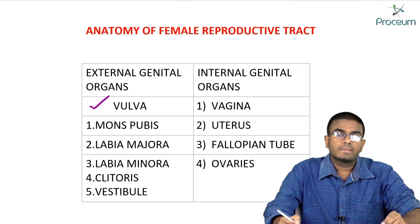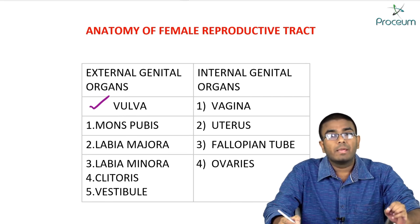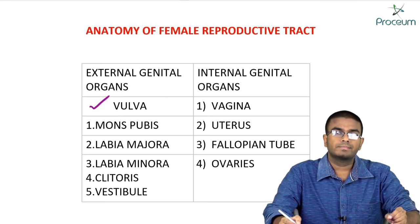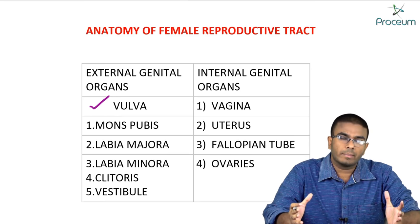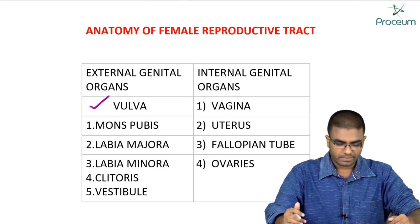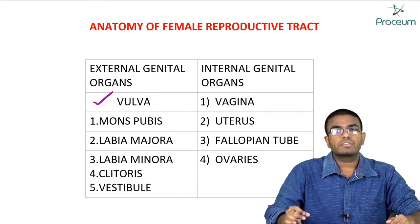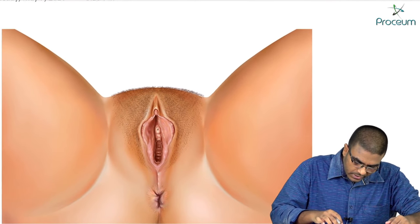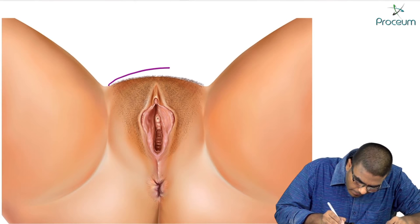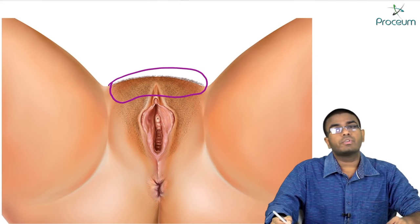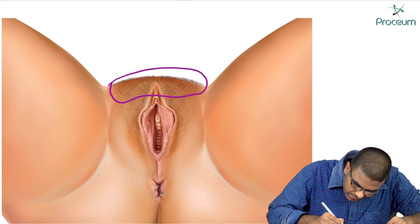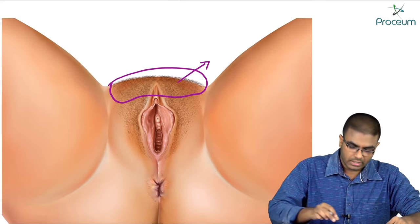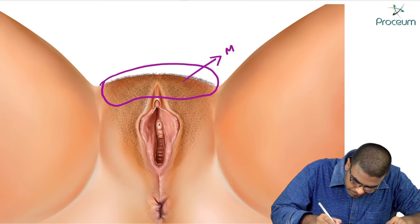Vulva is the external genital organ of a female which includes the mons pubis, labia majora, labia minora, clitoris, and vestibule. In this image, this thick pad of connective tissue which contains pubic hairs — this region is known as mons pubis.